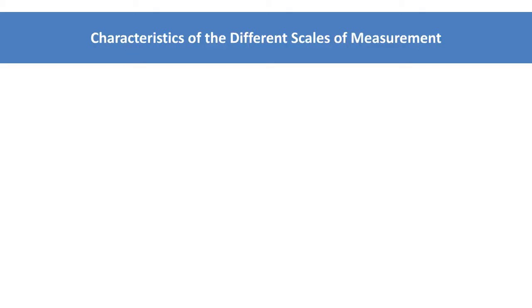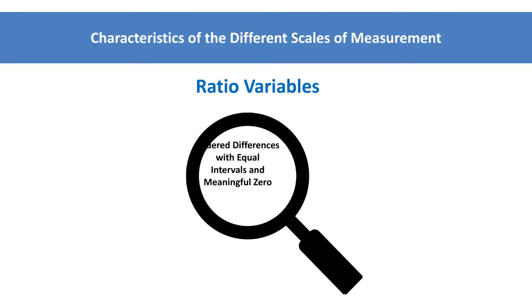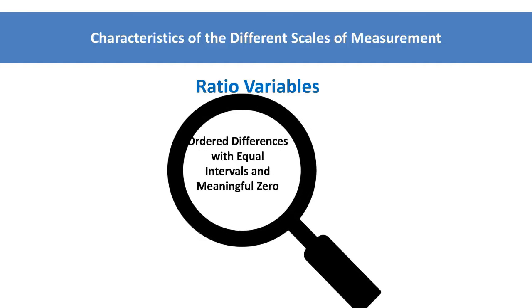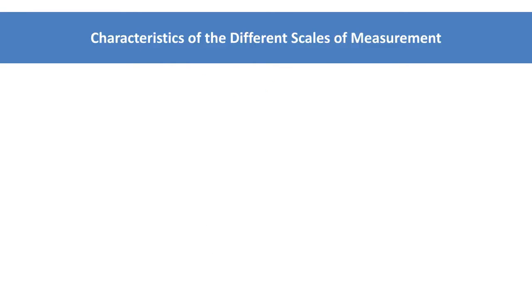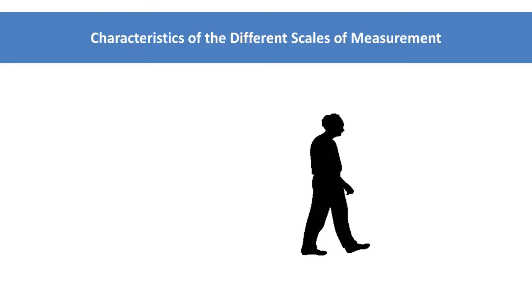The fourth and final level of measurement is ratio. It has all the characteristics of interval data plus a meaningful zero point. A good example of ratio level data is age. For instance, we know that someone who is 40 years old is twice as old as someone who is 20 years old. There is a meaningful zero point. That is, it is possible to have the absence of age.